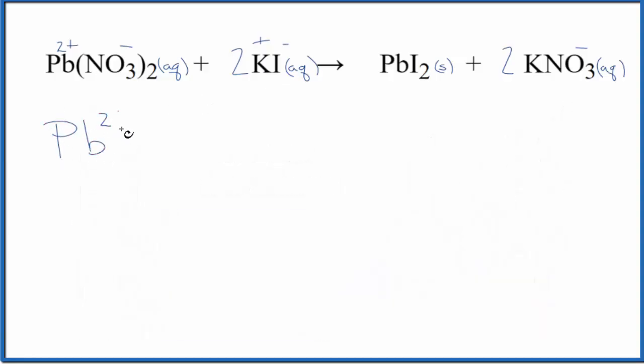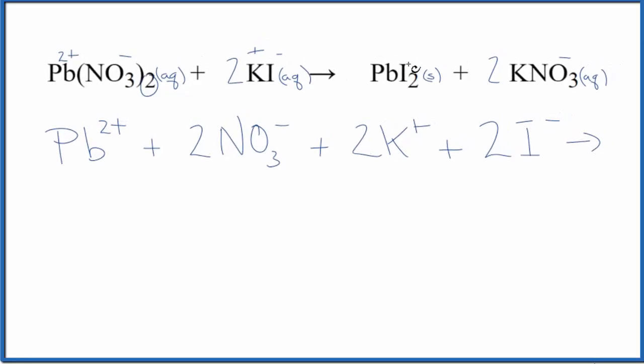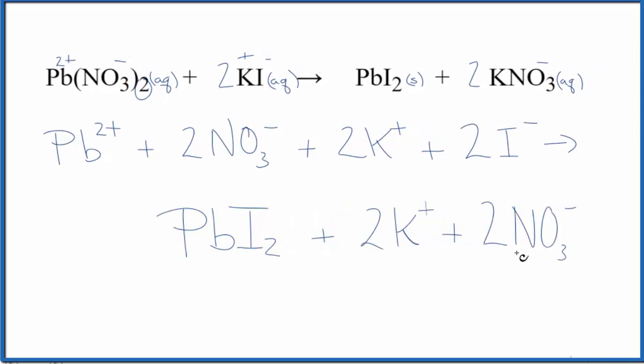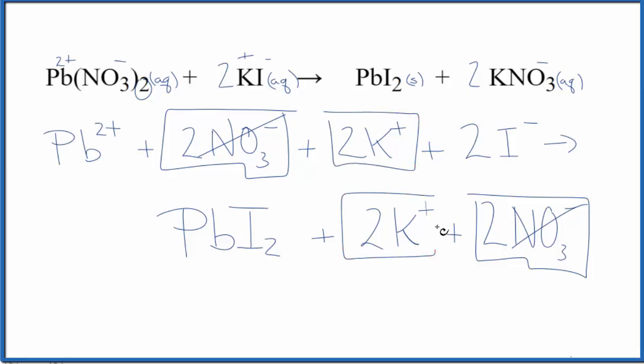We could say we have Pb2+, and I won't write aqueous each time, plus two nitrate ions, plus we have two of the potassium ions, and the two goes to everything. So we have two iodide ions. And those are the reactants. In the products, we don't split solids, liquids, or gases apart. So we're just gonna have that PbI2, which would be a solid. And then we have two potassium ions, plus two nitrate ions. So now we're back to just identifying our spectator ions. Pause, see if you can figure out which of these are spectator ions. So we have two nitrate ions in the reactants, and two in the products. These haven't changed. They're spectator ions. We can cross those out. Two potassium ions here, and then in the products, two potassium ions. Those are good. So these are the spectator ions in this reaction.